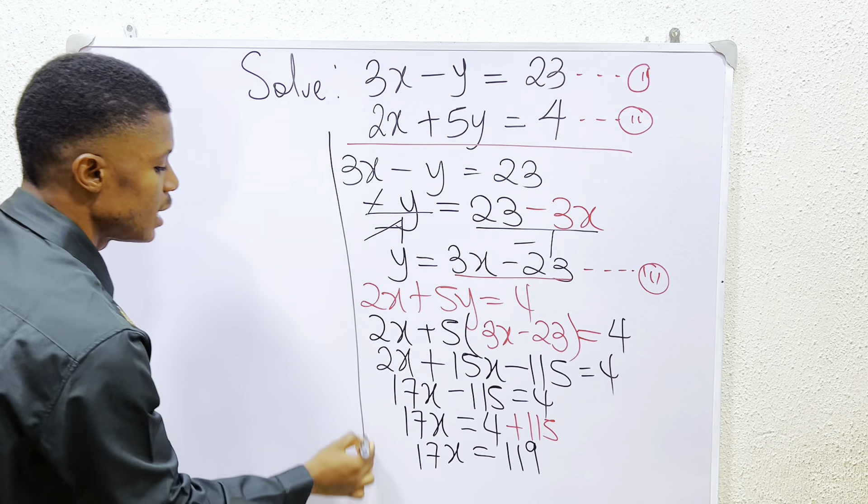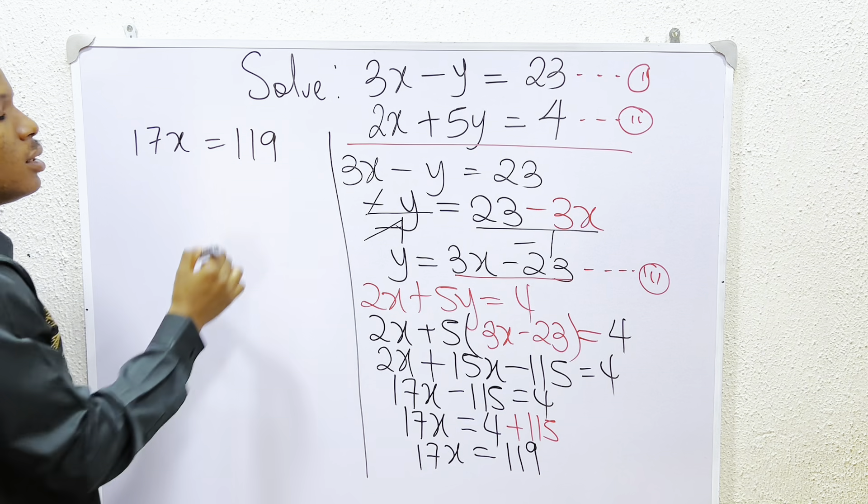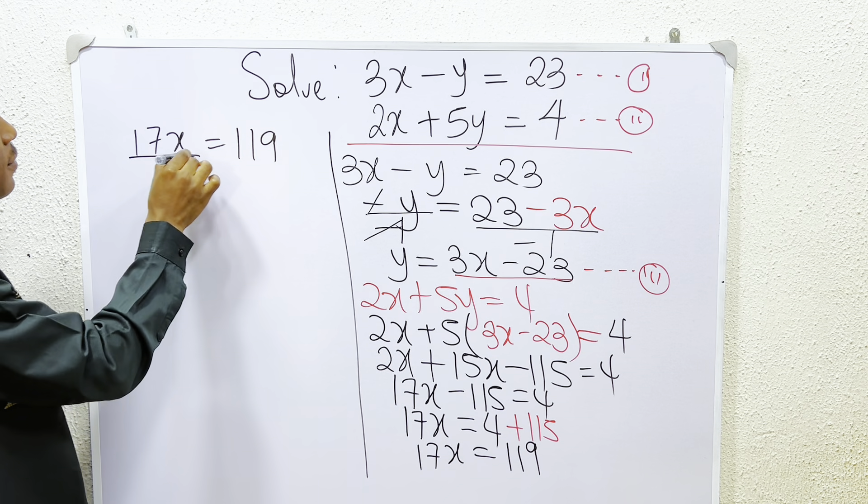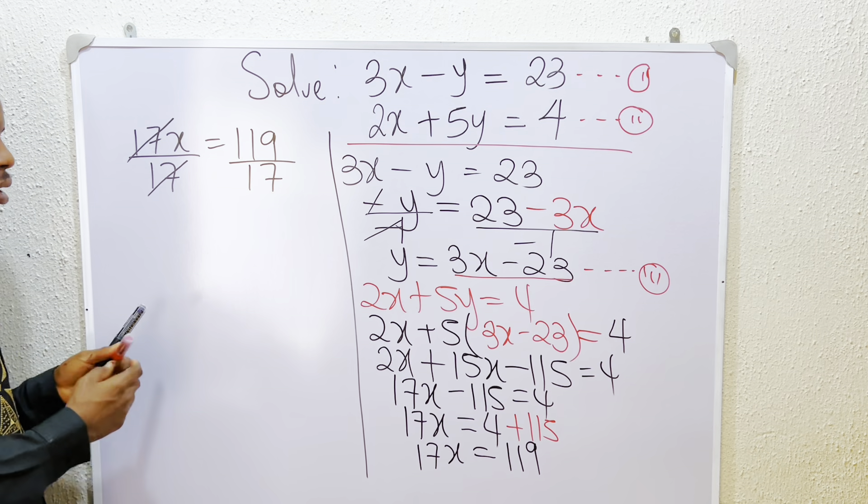So to get the value, you have it that since 17x is equals to 119, what do you do? You have to divide by 17 and divide by 17. What do you observe? You observe that x is equals to 7.